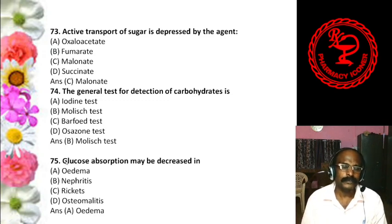Question 40: Which of the following is a reducing sugar? Sucrose, Trehalose, Isomaltose, or Agar. The answer is isomaltose. Sucrose is a non-reducing sugar. Question 41: Mutarotation refers to a change in — pH, Optical rotation, Conductance, or Chemical properties. The answer is optical rotation.